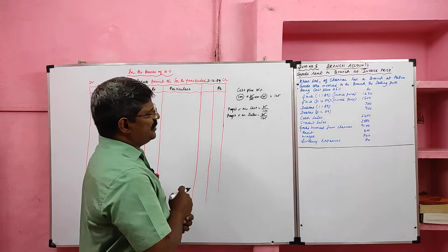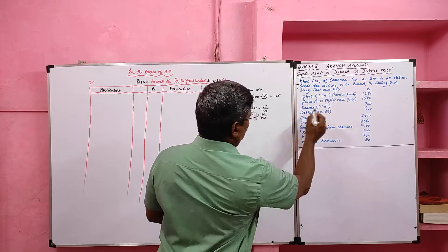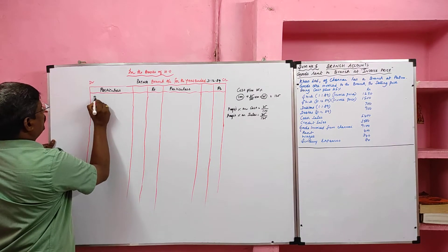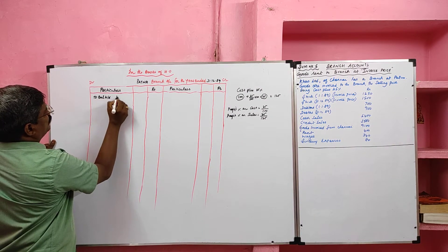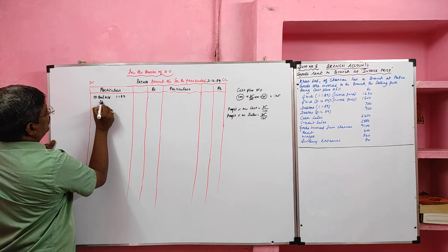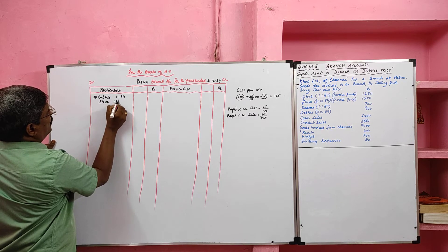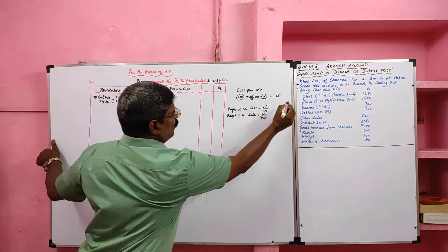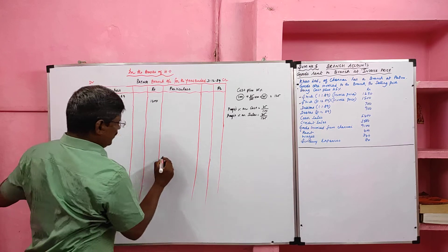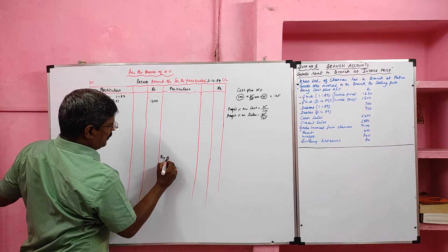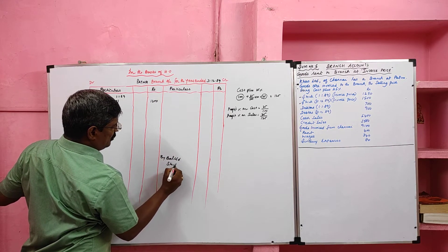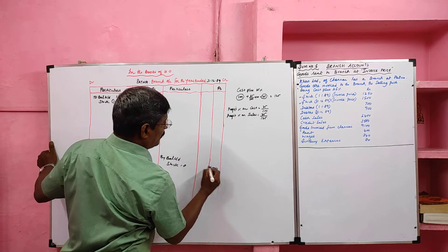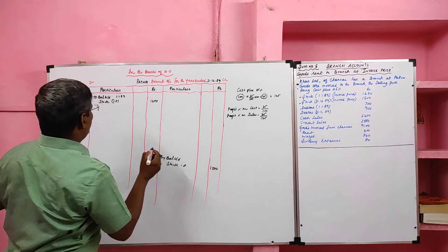Now starting the problem. Opening stock, which is at invoice price, is debited to balance b/d. Opening stock value is 1,050, given at invoice price. Closing stock is credited to the branch account by balance c/d. Closing stock is also given at invoice price, value 1,500.